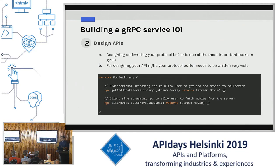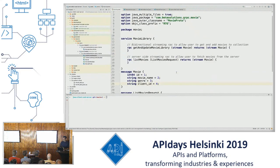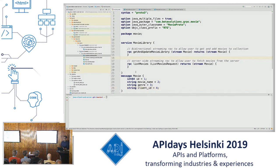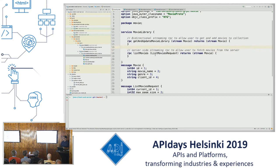The next part is designing your APIs — actually this is the most important thing while building a gRPC service. We can't override our existing structure; once you've written something, you've got to live with it. A well-written protocol buffer is one where each RPC is standalone, independent of others, and can perform one well-defined task. In my demo I've got a service called MovieLibrary with two RPCs: a bidirectional RPC and a server-side streaming RPC.